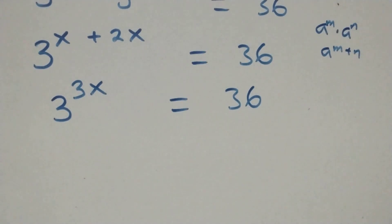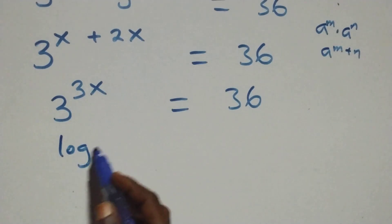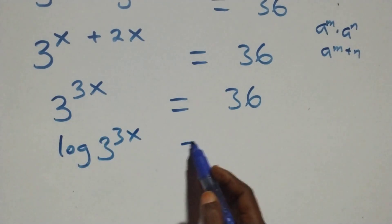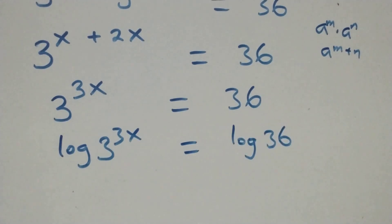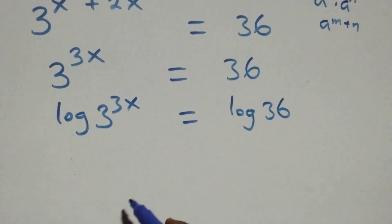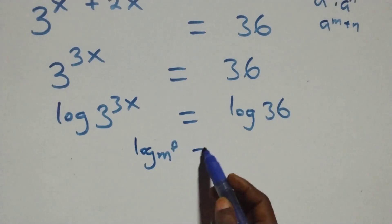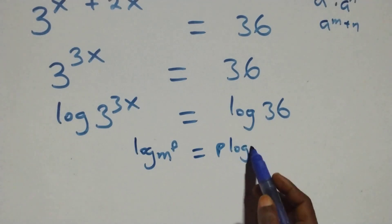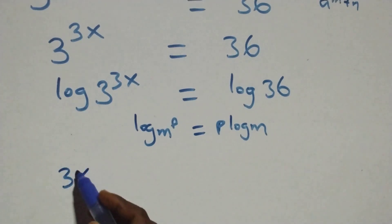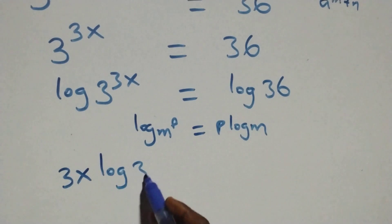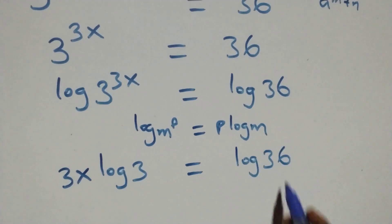The next step: we take the log on both sides. We have log of 3 raised to power 3x equals log 36. Then we apply the power rule of logarithms — log M raised to power P equals P·log M — so this becomes 3x·log 3 equals log 36.